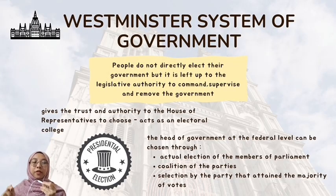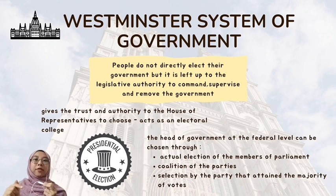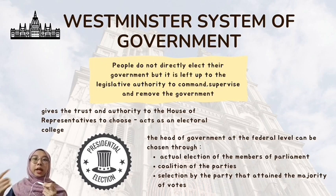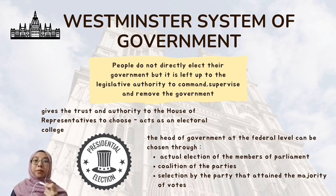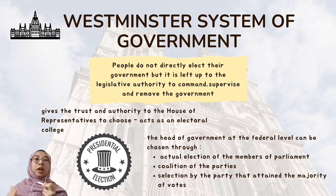The Westminster system is a government where citizens do not directly elect their government, but it is left up to the legislative authority to command, supervise, and remove the government. The system gives the trust and authority to the House of Representatives to choose the head of government, in which the House of Representatives acts as an electoral college. This can include various processes such as an actual election of members of parliament, coalition of parties — as happened recently during the general election in Malaysia — or a selection by the party that attained the majority of votes.